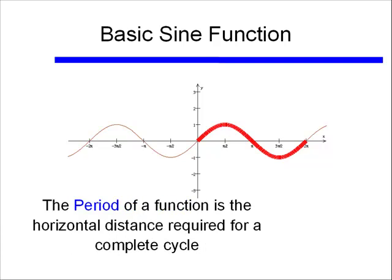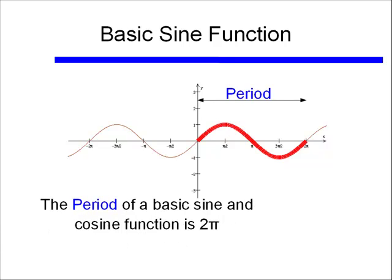We actually have a special name for that distance p. It's called the period. The period of the function is the horizontal distance, that is the distance along the x-axis, required to have a complete cycle. Here on the sine function, you can see that the period goes from 0 to 2 pi. If this was in terms of degrees, it would have been from 0 to 360 degrees. So a basic sine function has a period of 2 pi, and that's also true for the cosine function.